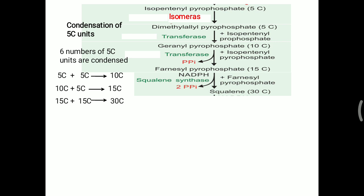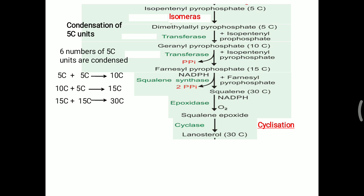Squalene is a linear 30-carbon structure. Since cholesterol contains three six-membered rings and one five-membered ring, squalene must be cyclized. First, squalene is converted to squalene epoxide by epoxidase enzyme, which requires NADPH and one molecule of oxygen. Both squalene and squalene epoxide are 30-carbon molecules.